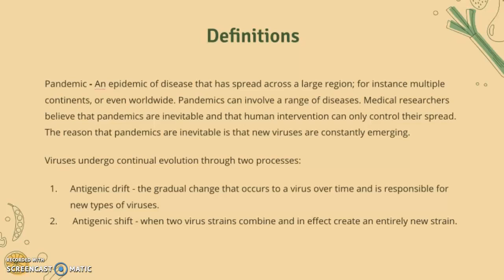So, definitions. A pandemic is an epidemic of disease that has spread across a large region, for instance multiple continents or even worldwide. Pandemics can involve a range of diseases. Medical researchers believe that pandemics are inevitable and that human intervention can only control their spread. The reason that pandemics are inevitable is that new viruses are constantly emerging.